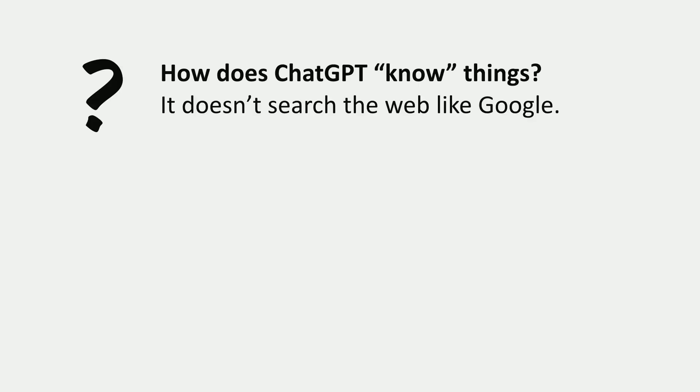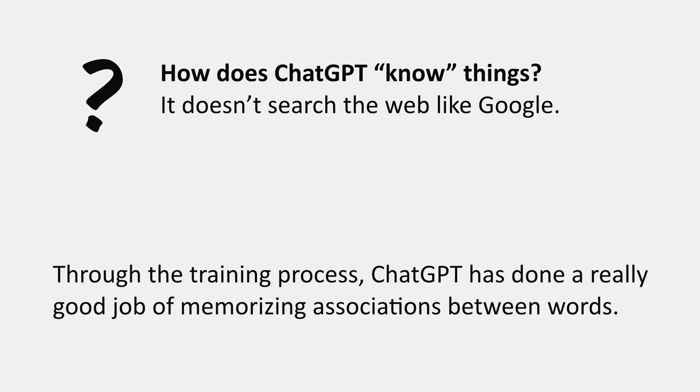ChatGPT can do all kinds of cool stuff for us, but one of the things it can do that's maybe the most surprising is that we can ask it relatively specific questions and it can give information that's factual a lot of the time. How does ChatGPT know things? Unlike Google, which can sometimes return good answers in the little box at the top, ChatGPT doesn't search the web. It doesn't have any way of pulling out information that other people have written. Instead, it totally relies on the information in its parameters from the training process, which are learning associations between different words in a very complex way.